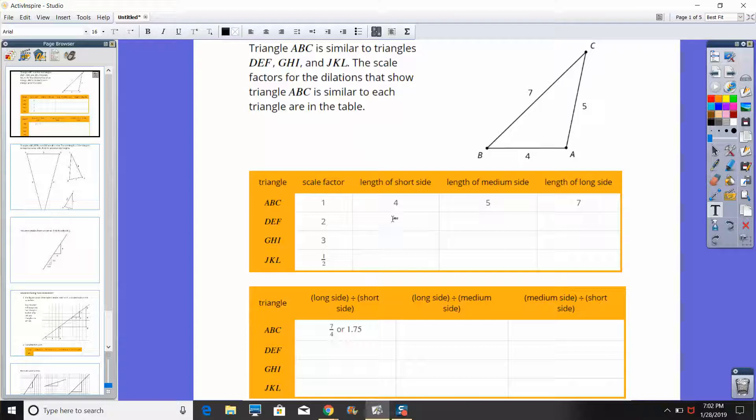If you create more triangles using scale factor of 2, then all you would have here is multiplication of 2 to get the new side lengths. So you would have 8, 10 and 14 for the scale factor of 2. For 3, you would have 12, 15 and 21. And then for scale factor of 1/2, you would have 2, 2.5 or 5/2 and 3.5 or 7/2.